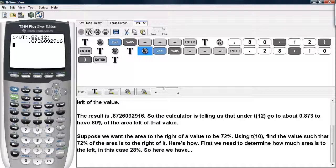Now suppose you wanted the area to the right of a value to be 72% under a t-distribution with 10 degrees of freedom. So what we do is say, if I want 72% of the area to the right, that means I have 28% of the area to the left.